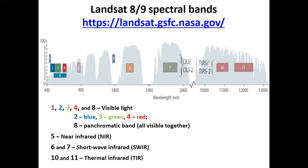For example, bands 2, 3, and 4 together cover visible light — there are three sensors detecting it. Sensor number 2 records blue light separately, and sensor number 3 detects and records green light separately from blue and red.